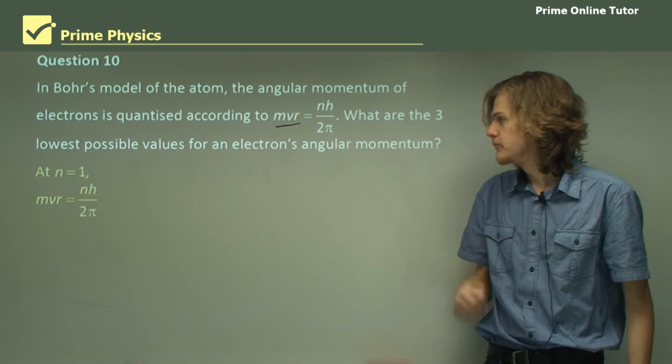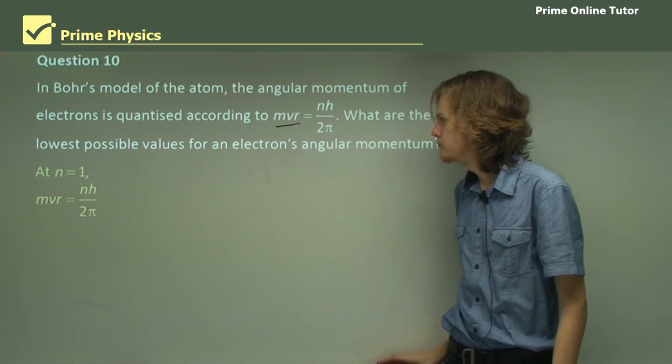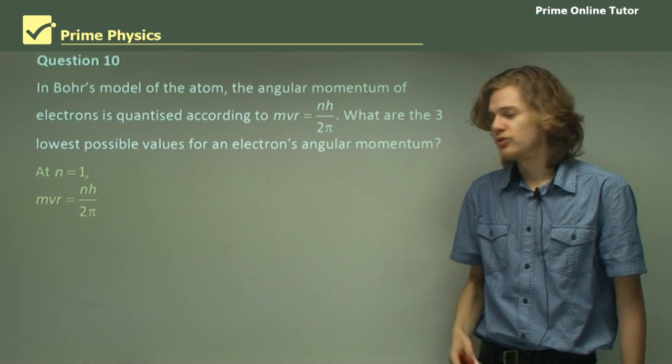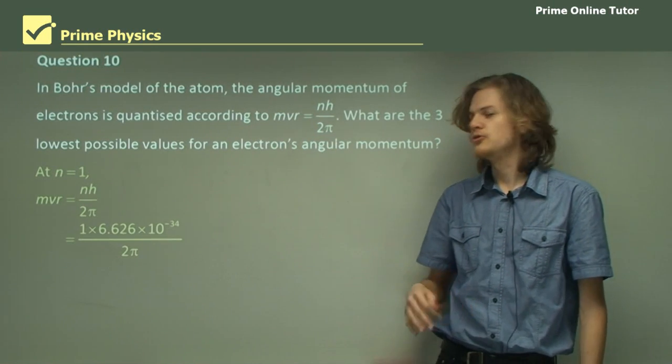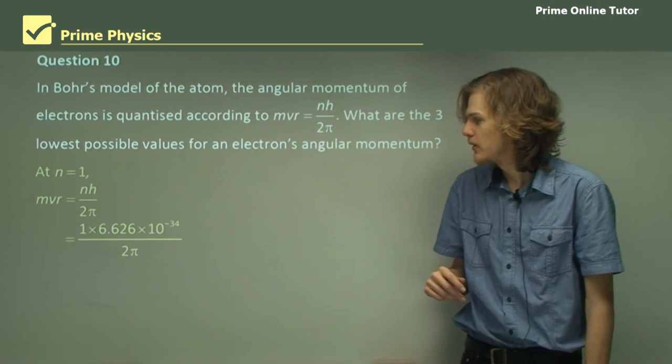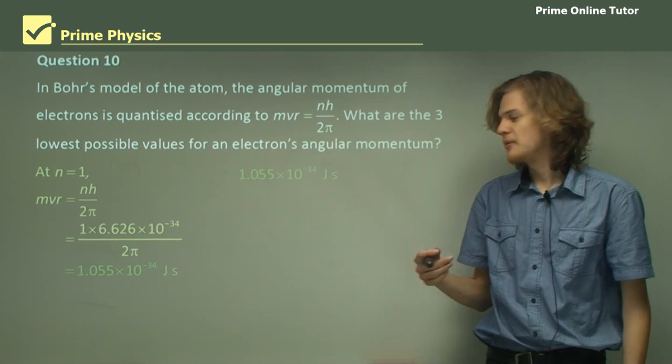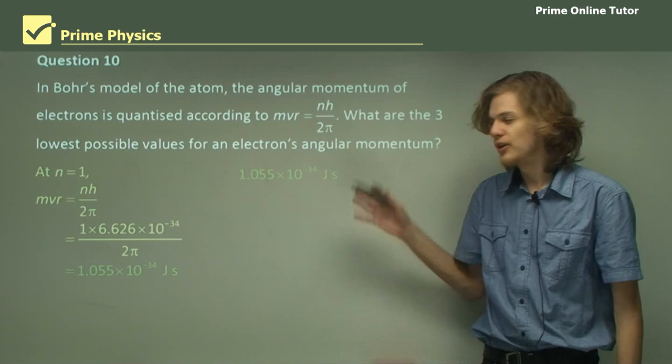So, at n equals 1, the angular momentum equals nh over 2 pi. Makes sense, right? So, substitute n equals 1. Substitute h equals 6.66 times whatever. And 2 pi, our calculator knows how to do pi. And so, that'll give us about 1 times 10 to the minus 34 joule seconds. Okay, so that's n equals 1.